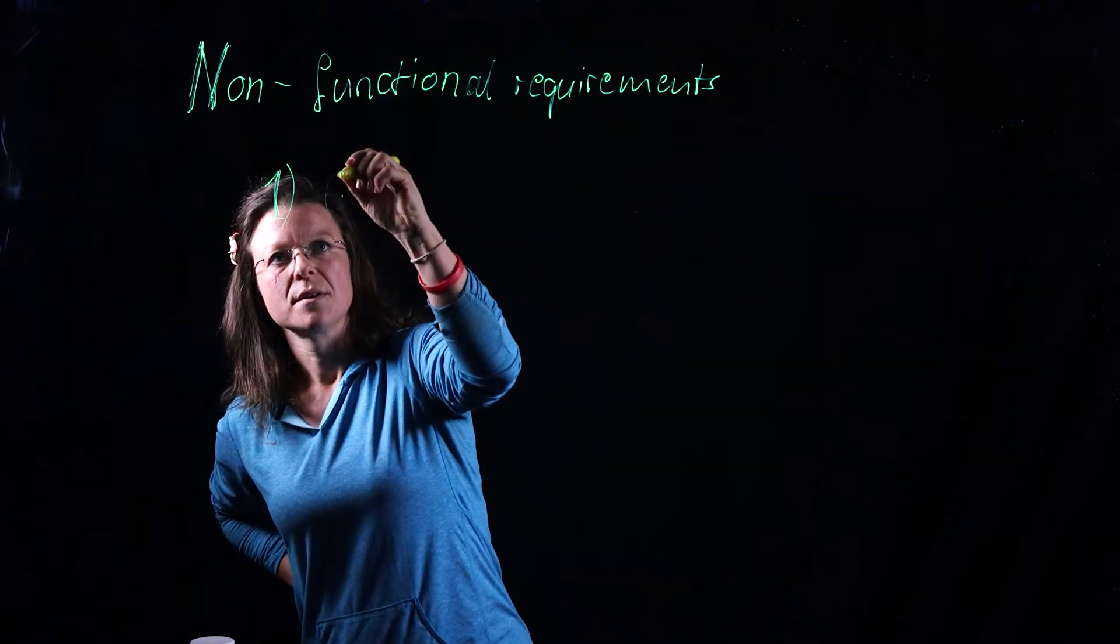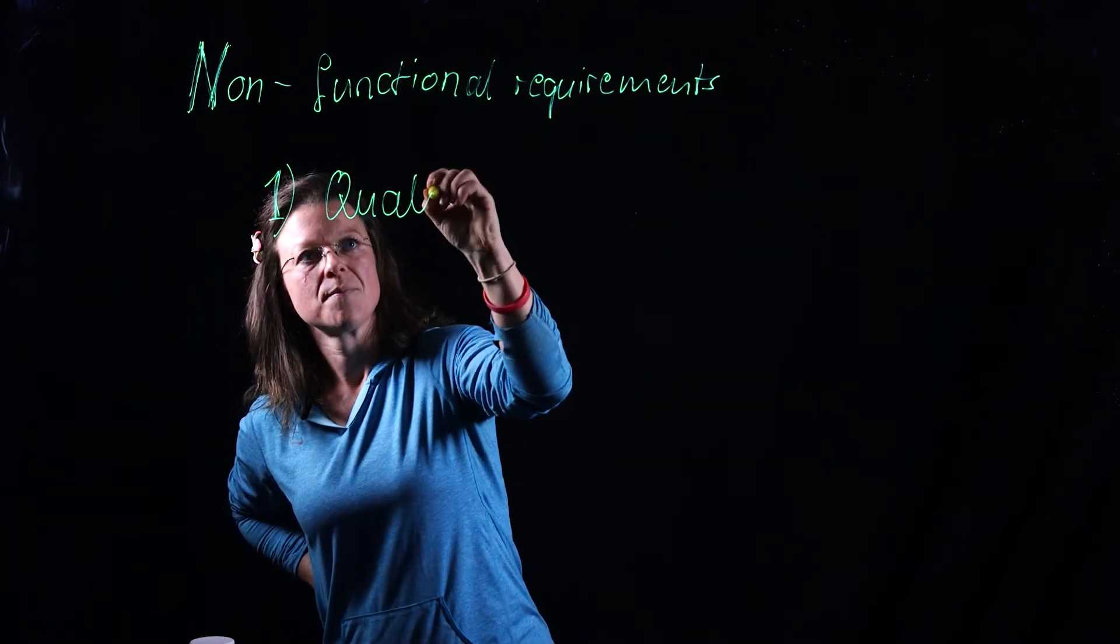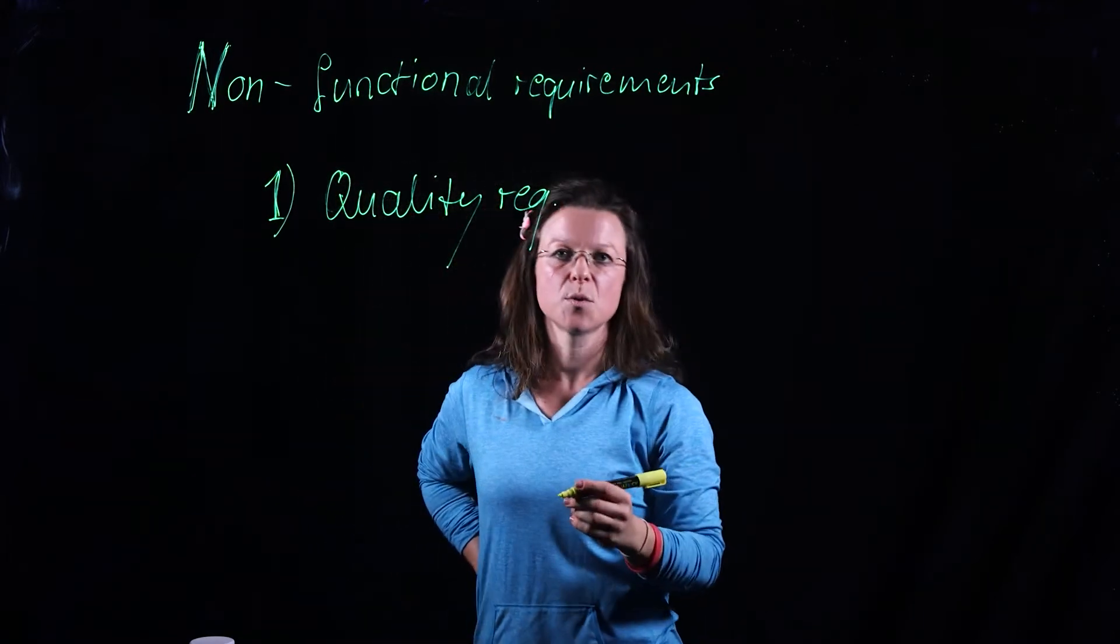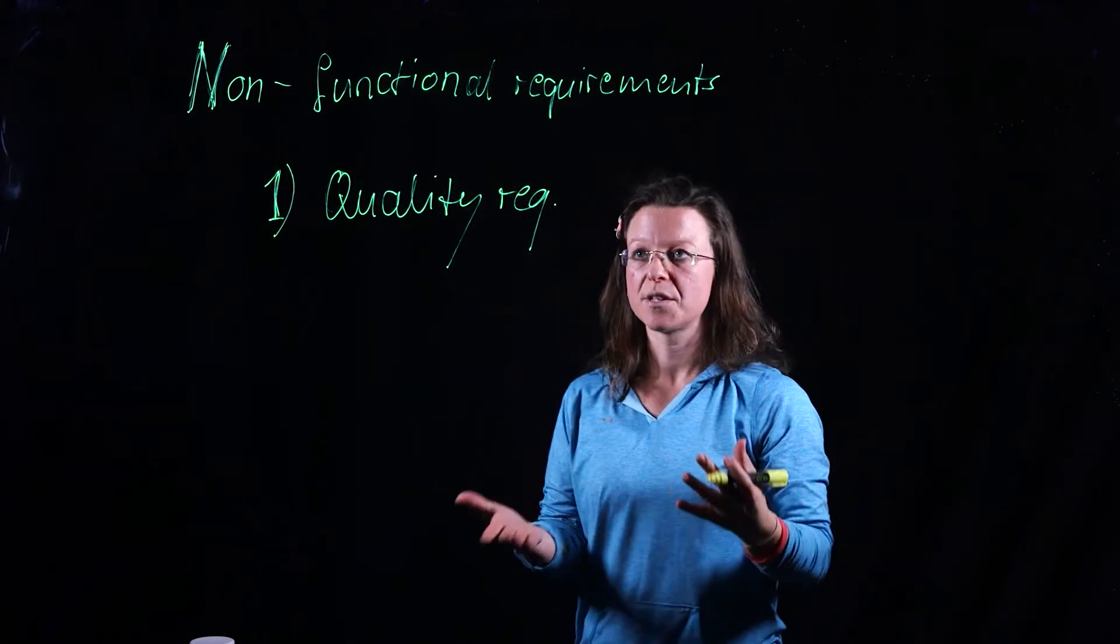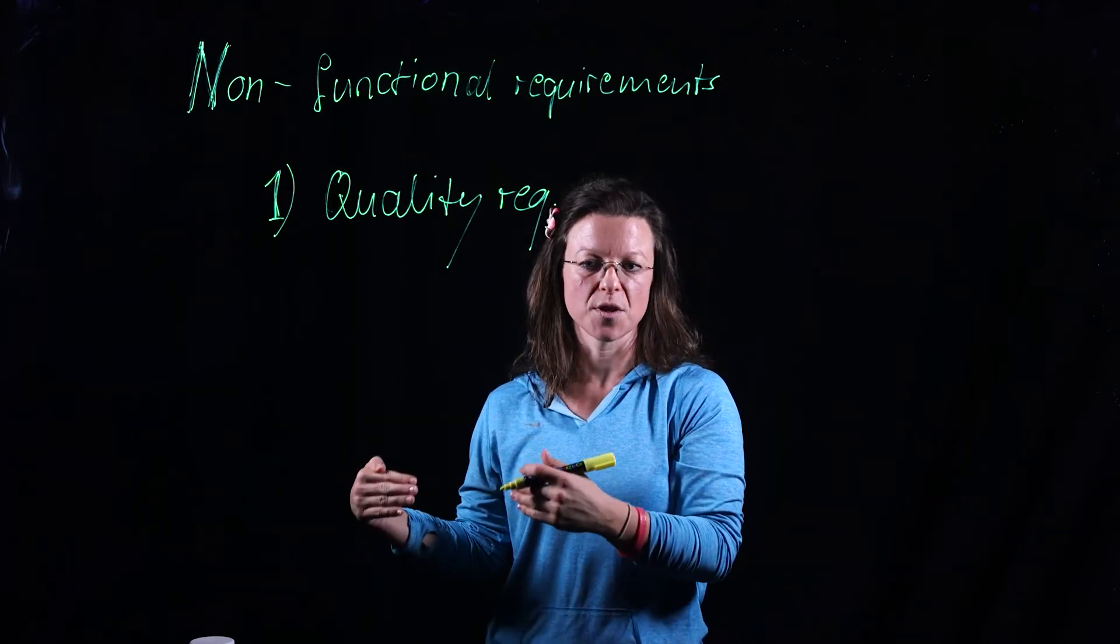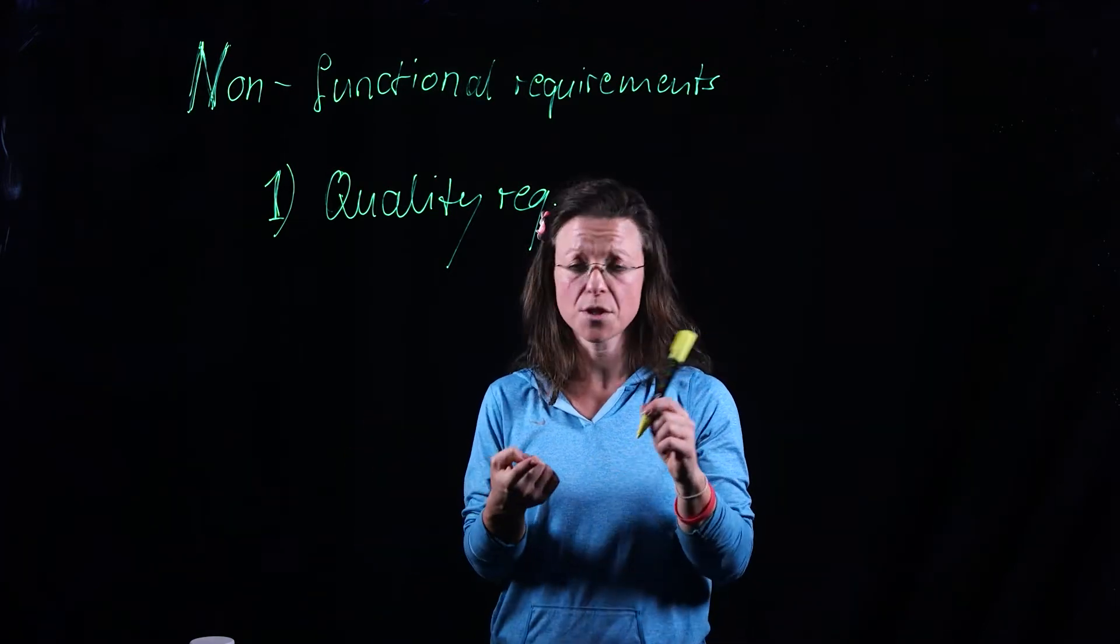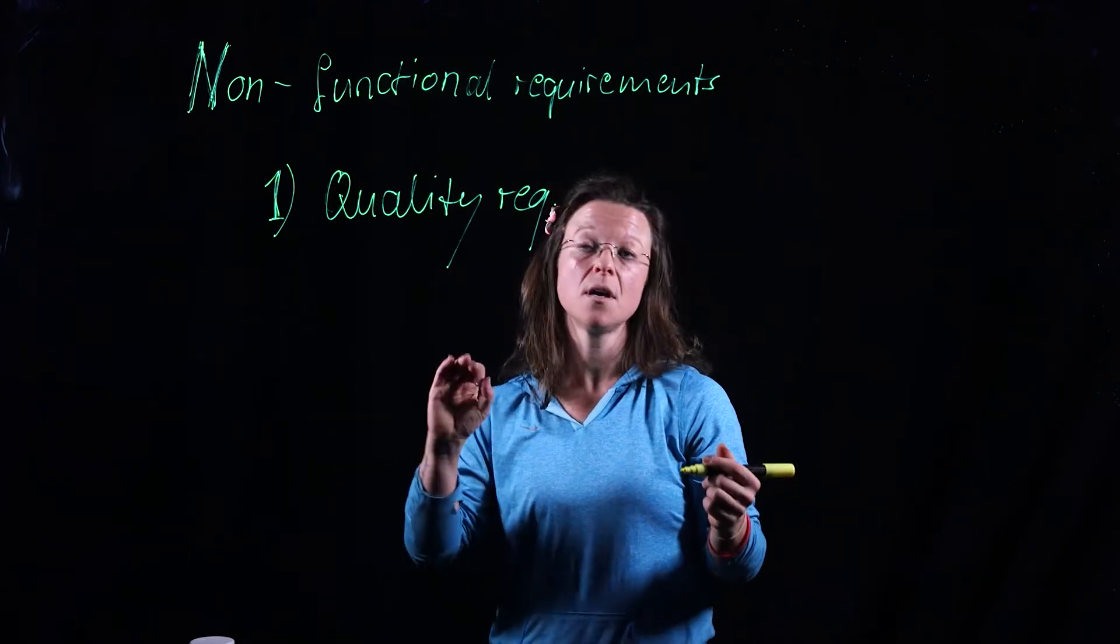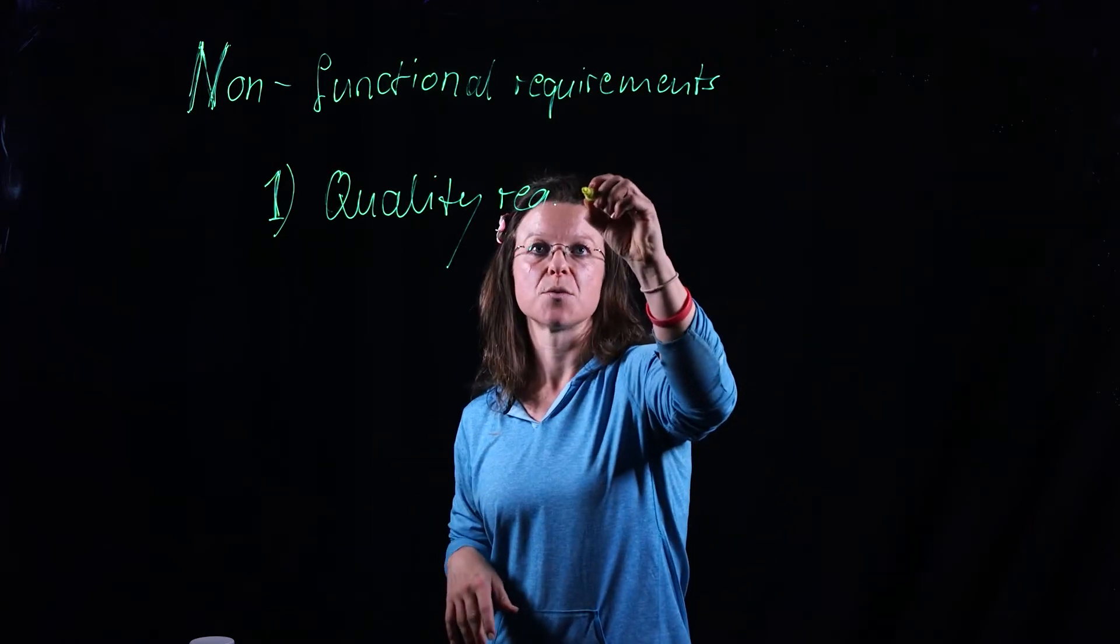First subtype is quality requirements. Quality requirements refer to quality attributes or characteristics and break them down for a specific project. We talk about maintainability, availability, reliability, performance, usability, all those beautiful quality characteristics.